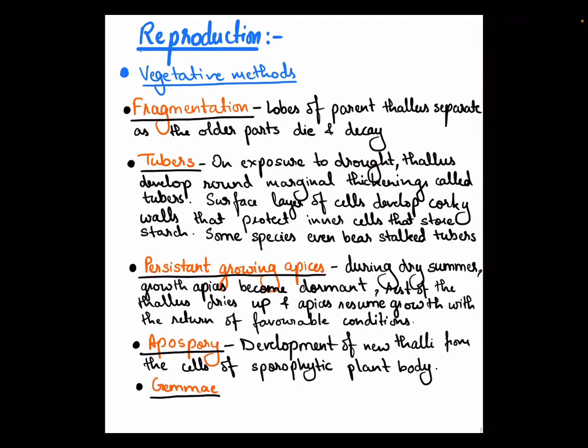First, let's discuss vegetative methods. The best method is fragmentation. It is a very common method. The plant body is divided into fragments and separated. The body connected to the fragments decays and dies. The lobes are automatically separated — this is a natural method. It does not require special conditions. As old parts decay, new lobes are separated naturally.